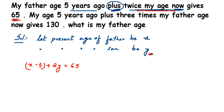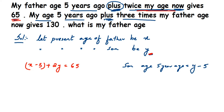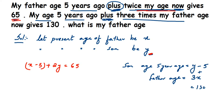For the second condition: my age five years ago — the son's age five years back is Y minus 5. Plus three times my father's age — three times means 3 into X, which is 3X. When you add these together it gives 130. So the second equation is: Y minus 5 plus 3X equals 130.